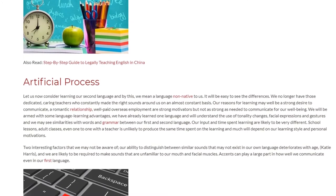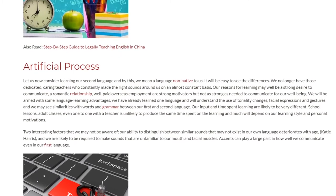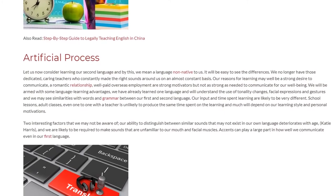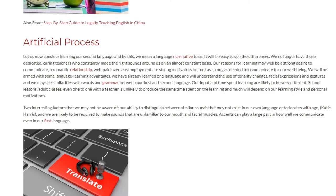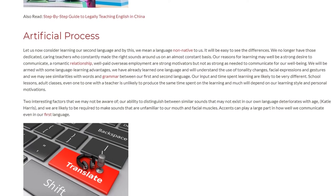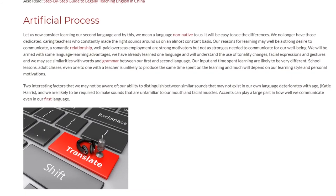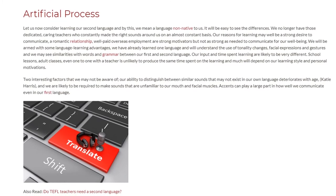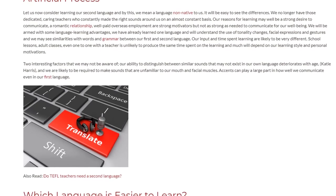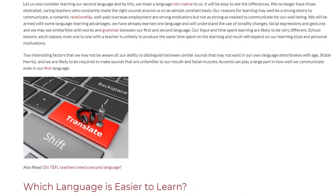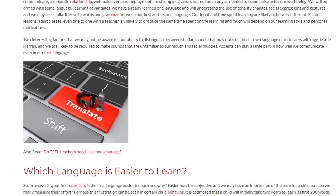We will be armed with some language learning advantages. We have already learned one language and will understand the use of tonality changes, facial expressions, and gestures, and we may see similarities with words and grammar between our first and second language. Our input and time spent learning are likely to be very different — school lessons, adult classes, even one-to-one with a teacher are unlikely to produce the same time spent on learning, and much will depend on our learning style and personal motivations. Our ability to distinguish between similar sounds that may not exist in our own language deteriorates with age, and we are likely to be required to make sounds unfamiliar to our mouth and facial muscles.